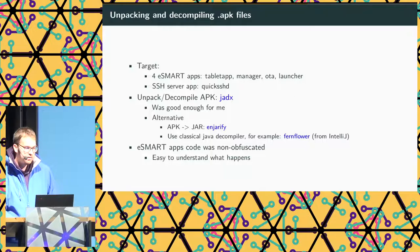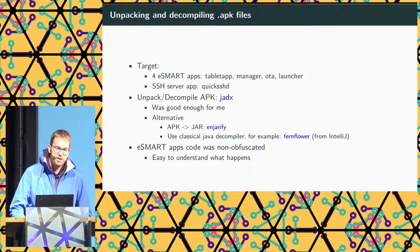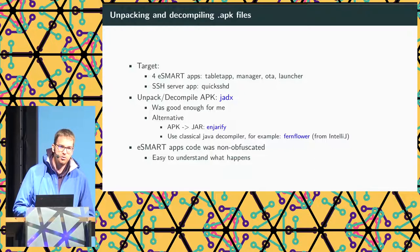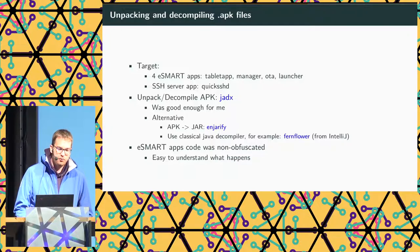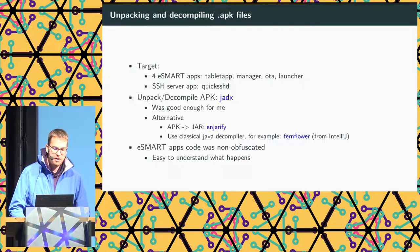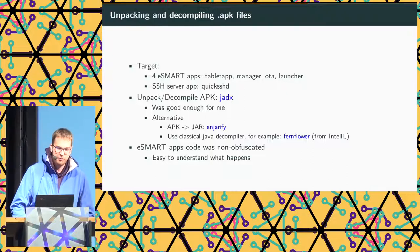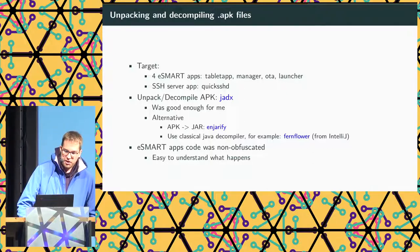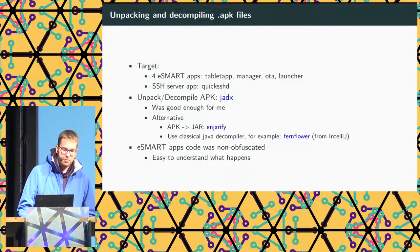I used JADX to unpack and decompile the APKs. Sometimes it couldn't decompile all of the code, but it was good enough. Another option would have been converting the APK to a JAR file with a tool like dex2jar, then using Java decompilers like Fernflower built into IntelliJ, but I tried that and it ran for three hours and was still stuck. JADX worked better. After decompiling, the four eSmart apps were not obfuscated, so it was really easy to see what was happening.